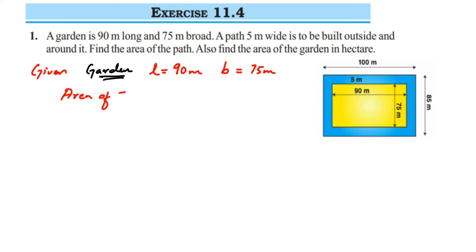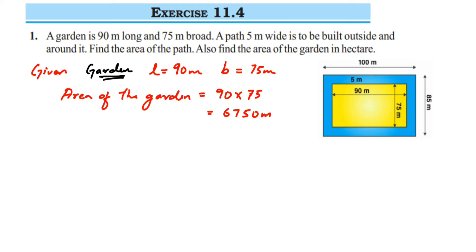The area of the garden is equal to 90 multiplied by 75, which gives us 6750 meter square.